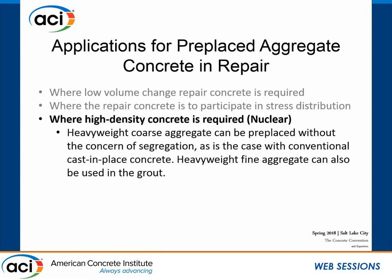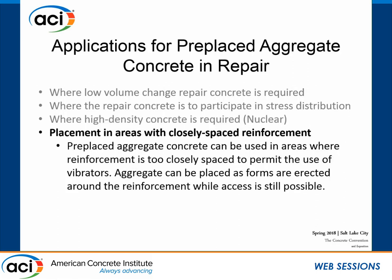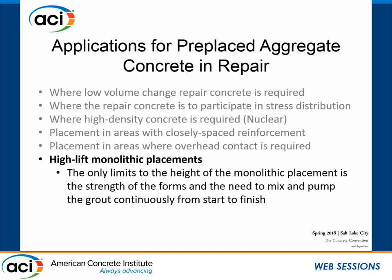Nuclear facilities use a lot of pre-placed aggregate concrete because they want heavyweight aggregate and heavyweight fines. With conventional concrete, you get segregation problems, but with pre-placed aggregate, you place the aggregate right from the start and get it exactly where you want it. Where you have closely spaced reinforcement, you can literally place the aggregate in between the reinforcement, pump the grout in, and it works very well. It also works well in high-lift placements where you need to make a very large placement all at once.